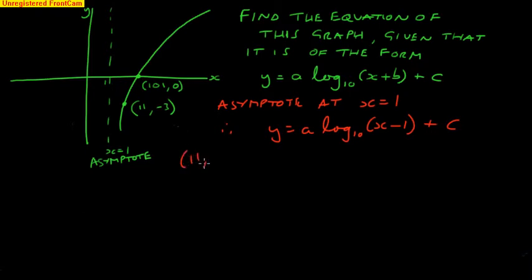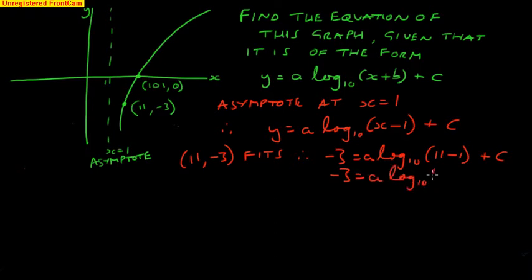I've got the point 11, minus 3 that fits my curve. Therefore, y is minus 3 equals a log to base 10, x is 11. I'll just have to do a bit of rearranging here. We've got minus 3 equals a log to base 10 of 10, the minus 1 being 10, plus c.